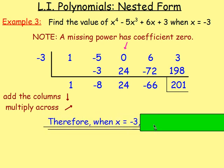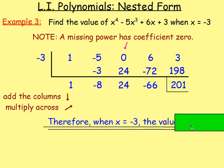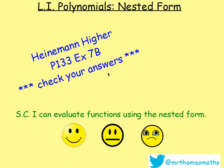Therefore, you can say that when x is negative 3, the value will be 201. So that is the nested form. As I said, you will need that when we are going to factorize polynomials. But practice it now. See how you get on. It's exercise 7b in the Heinemann Higher book. Good luck. Have fun. Bye.